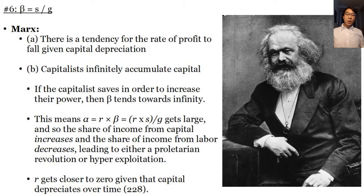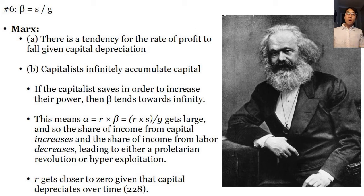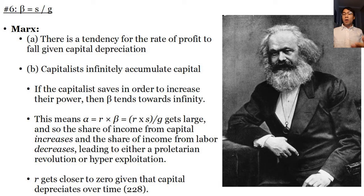How does the second law relate to the history of wealth inequality? We consider a theory of Karl Marx's discussed earlier. Marx believed in the following disjunctive proposition: either there's a tendency for the rate of profit to fall given capital depreciation, or capitalists will infinitely accumulate capital. If the capitalist saves in order to increase their power, then beta tends towards infinity, meaning alpha — equal to r times beta, or r times s over g given the second law — gets large. So the share of income from capital increases and the share of income from labor decreases, leading to either a proletarian revolution or hyper-exploitation. This is just Marxist theory — Piketty actually disagrees with many of these claims. Rather, as r gets closer to zero given capital depreciation, we can provide a model of wealth inequality. Piketty posits the first and second laws of capitalism while disagreeing with the conclusions drawn by Marx.